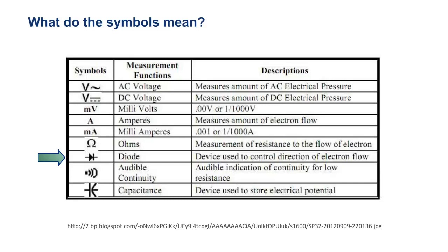The next symbol, that arrow pointing to like a T on its side, that's diode. We don't use it. But if you're wondering what it is, it's basically a check valve for electricity.